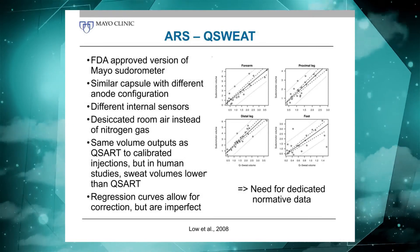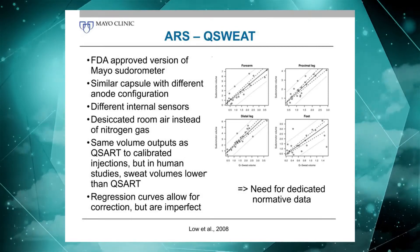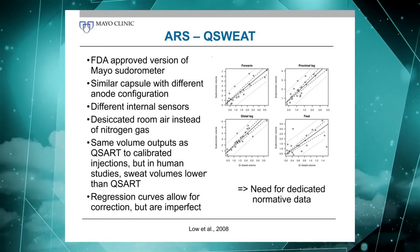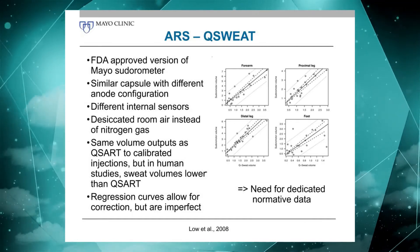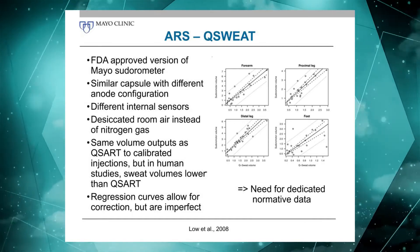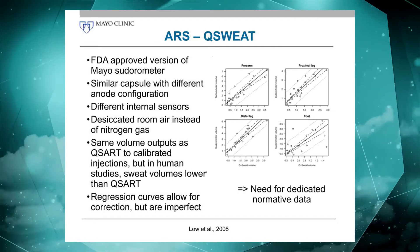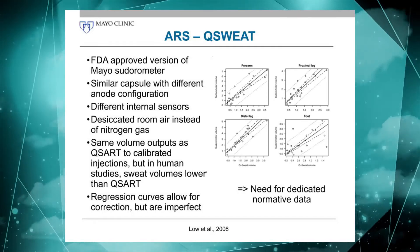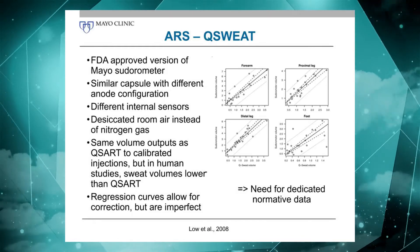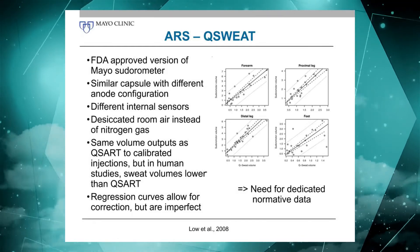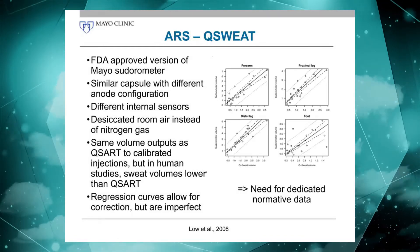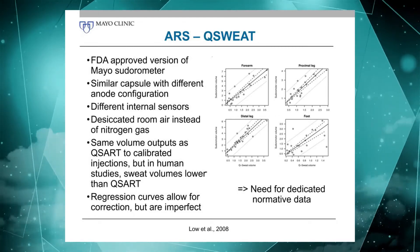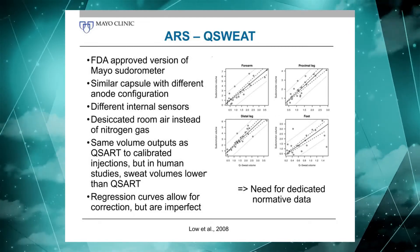Briefly about Q-sweat. You may have heard that and wonder what's Q-sart, what's Q-sweat. Q-sweat is the commercial version of Q-sart — it is still a Q-sart, just has its own brand name. There are a few differences from the original Mayo sudorometer, such as certain sensors, the type of gas used, the desiccant, and so on. But overall, the principle is the same.